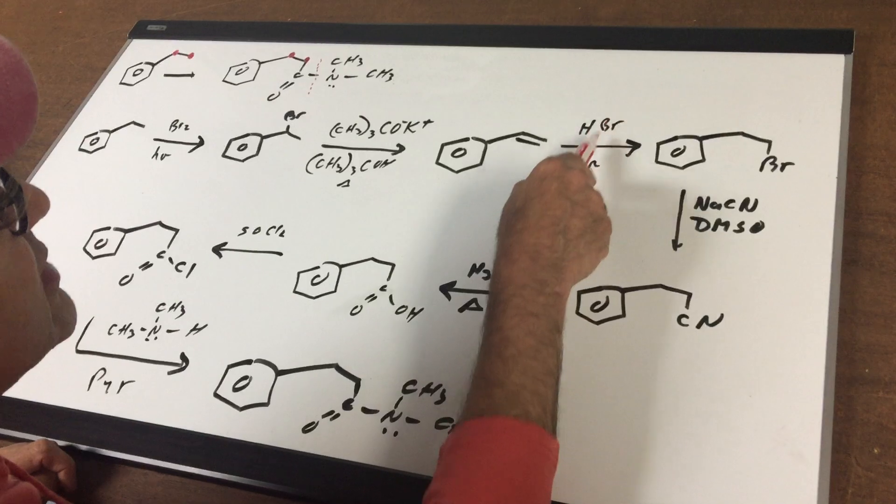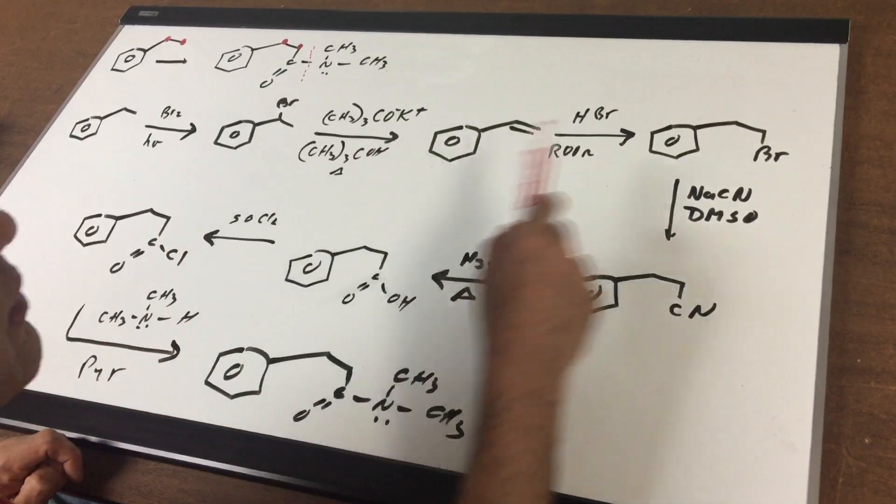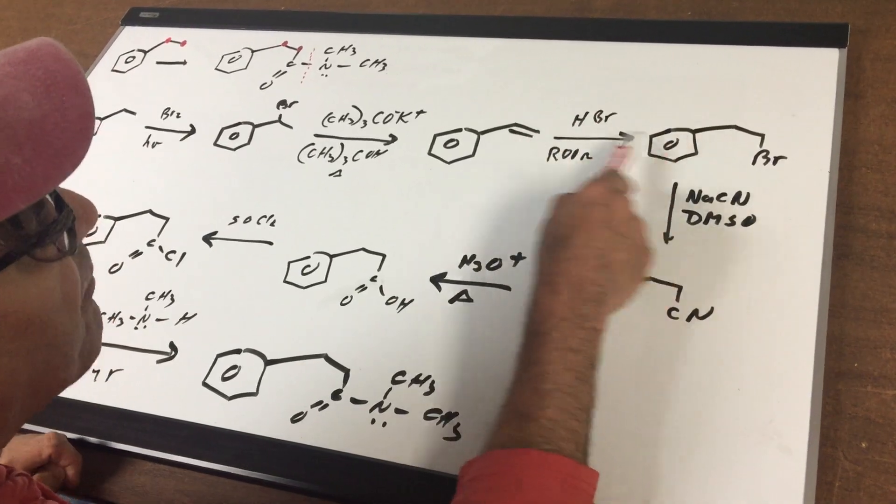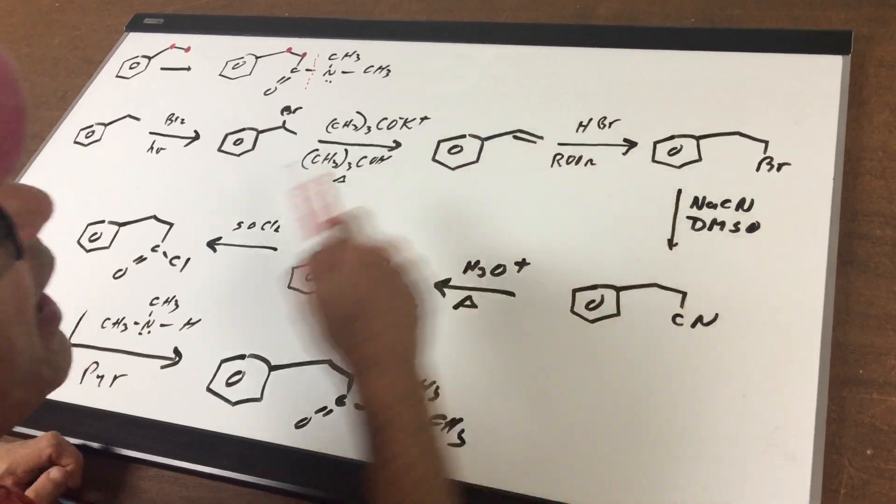Then, I'm going to use HBr and peroxide. That'll put the bromine to the outside. If you remembered, this reaction is very important for the DAT. In fact, it's an anti-Markovnikov addition.